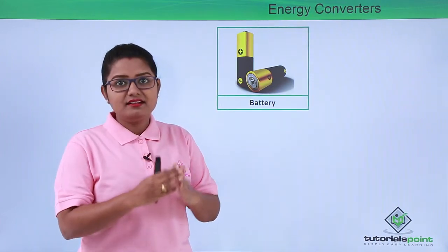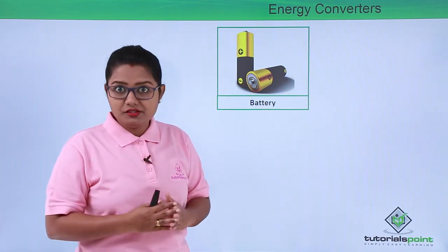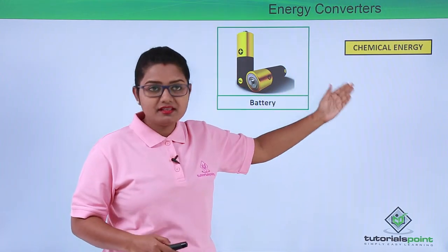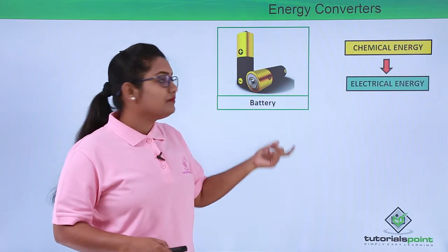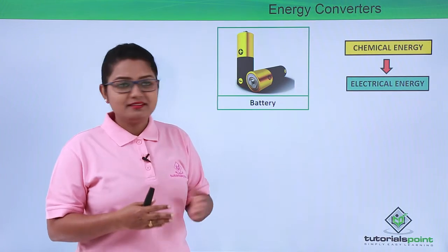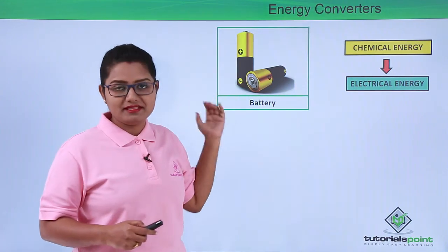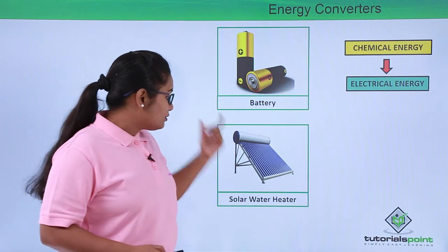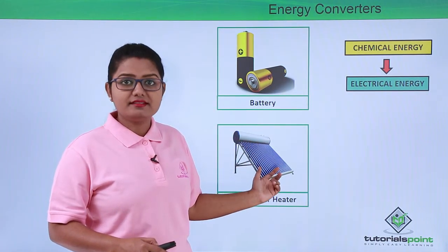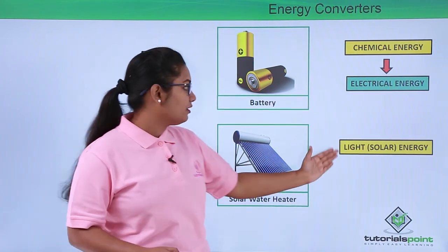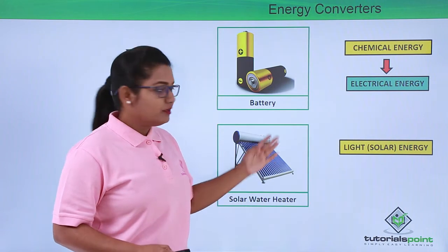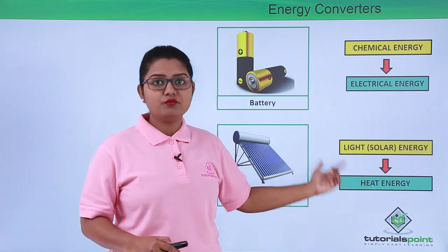A battery usually has chemical reactions going on inside it, which generate chemical energy. The battery converts this chemical energy to electrical energy, which we can use for remote controls or torches. Similarly, a solar water heater converts solar energy — or light energy — falling on its panel into heat energy, which is used to heat water.